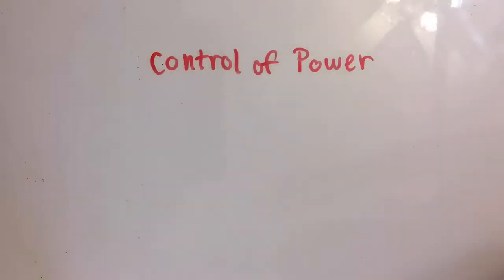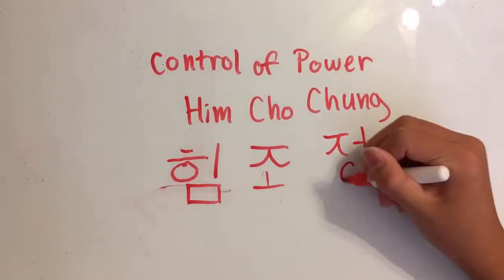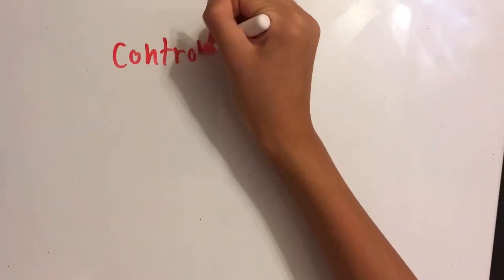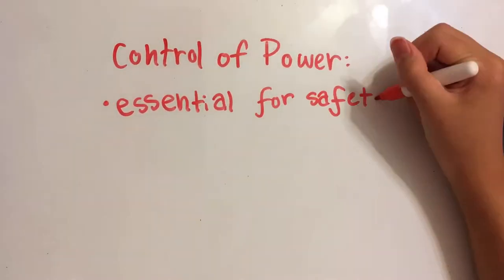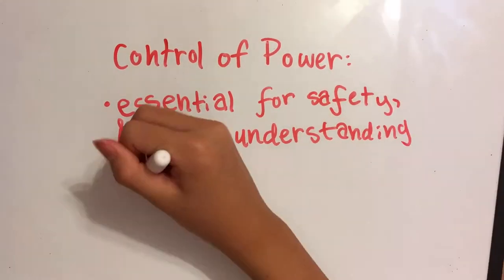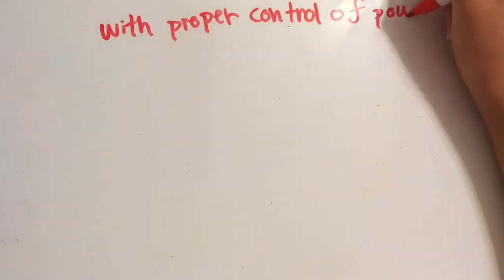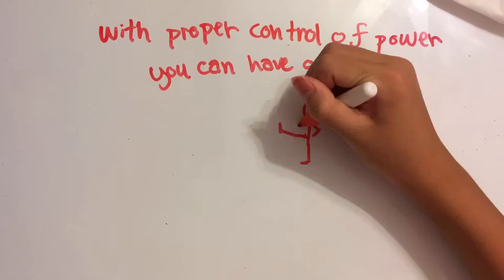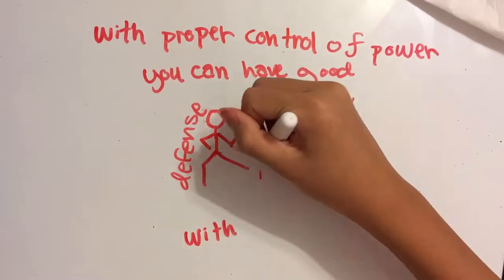Number six, control of power. Control of power is essential for safety, particularly in partner work, and an understanding of when to be loose and when to be tight. With proper control of power, you can have good offense and defense techniques without physical contact with your partner.